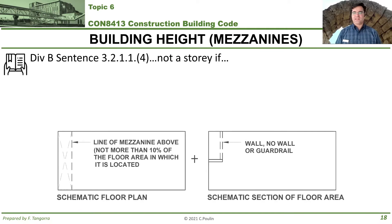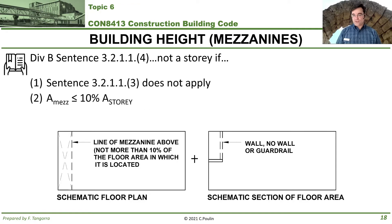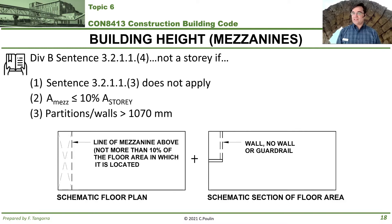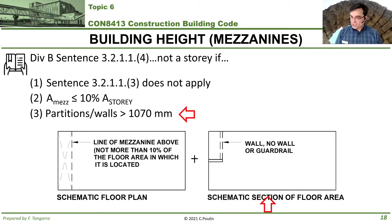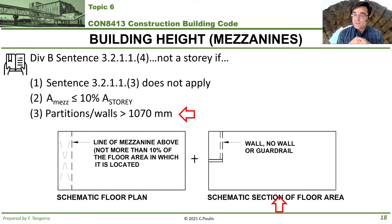Now let's look at sentence 4, that is Division B 3.2.1.1.4. A mezzanine is not considered a story if the previously seen sentence 3 does not apply, and the area of the mezzanine is less than 10% of the story, and the partition walls are more than 1070 millimeters. All of these conditions must apply together. If all of them apply, then this mezzanine is not a story. If even one of them does not apply, then it is a story.